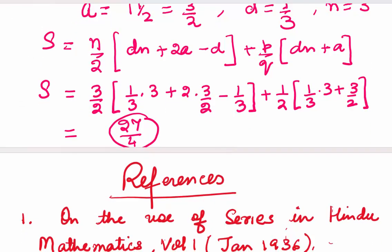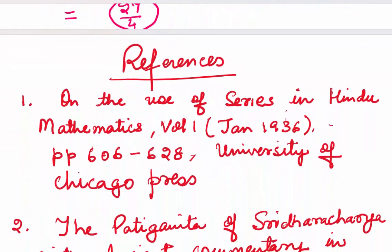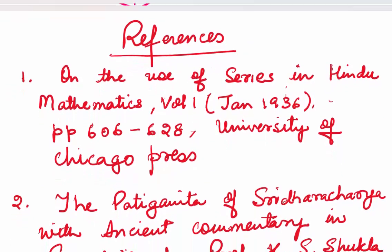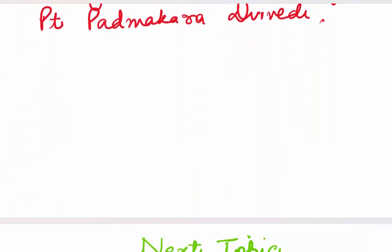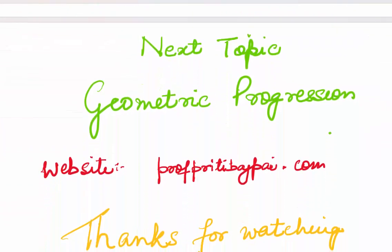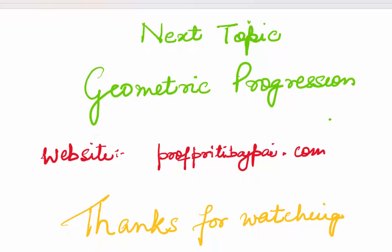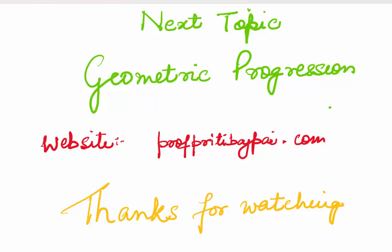Here you saw that all the ancient Indian mathematicians used the same formulas for arithmetic series, what terms they used, and what questions they were solving. One thing which I find interesting is that they had not limited themselves to an integer value of N. The references I have used are given here. Thank you for watching. The next topic will be geometric progression. You can watch my website ProfessorPreetiBajpayee.com for all other courses and problems for practice. Thanks once again.